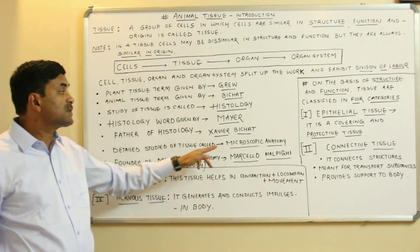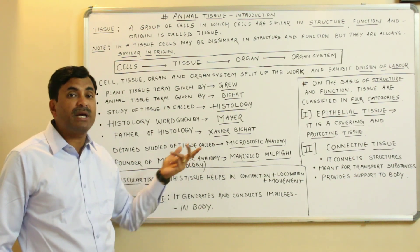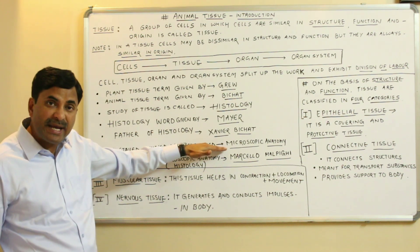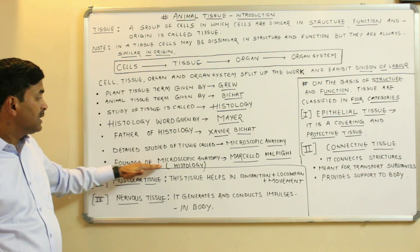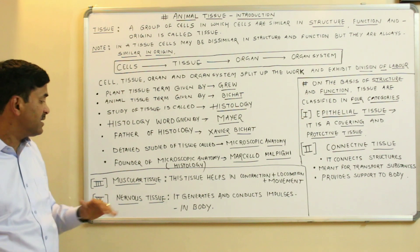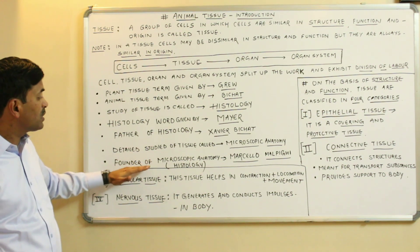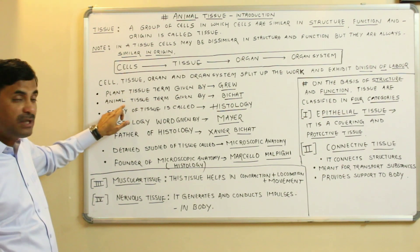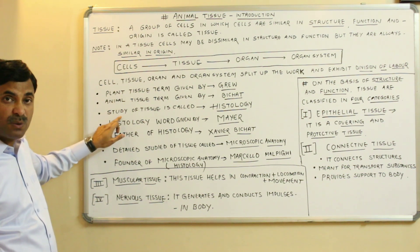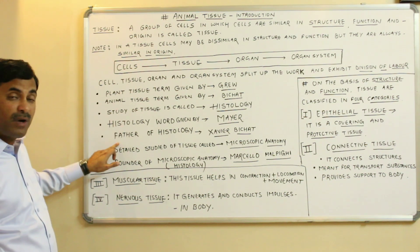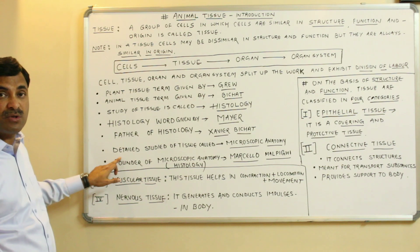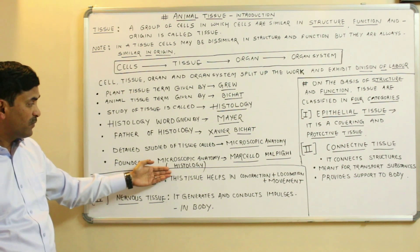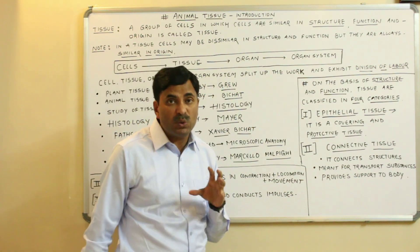The detailed study of tissue is called microscopic anatomy. Anatomy means the study of internal organization. The founder of microscopic anatomy — or founder of histology — is Marcello Malpighi. To summarize: plant tissue term by Grew, animal tissue term by Bichat, histology term by Mayer, father of histology is Bichat, and founder of microscopic anatomy is Marcello Malpighi.